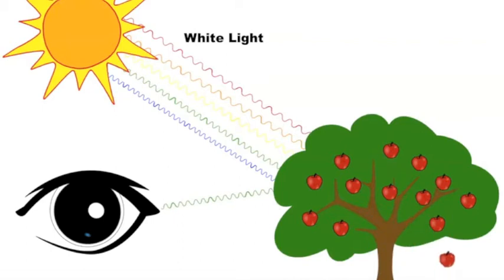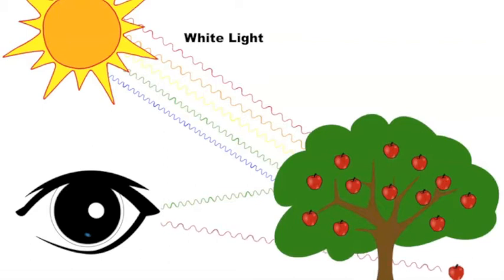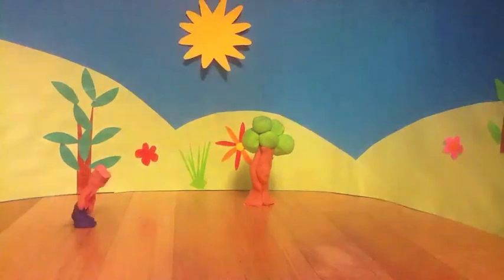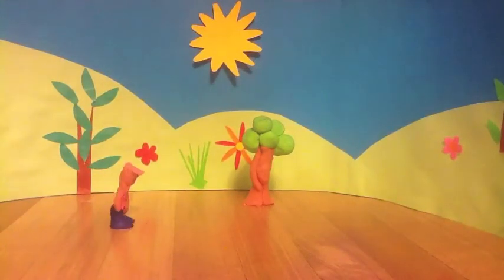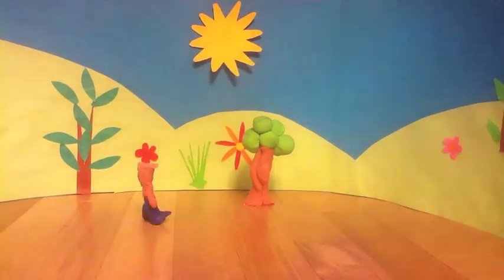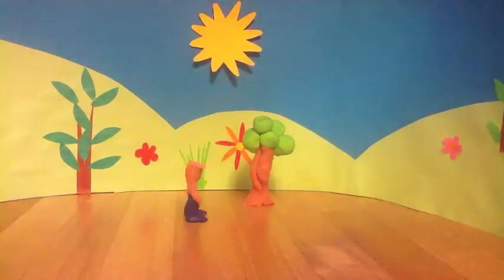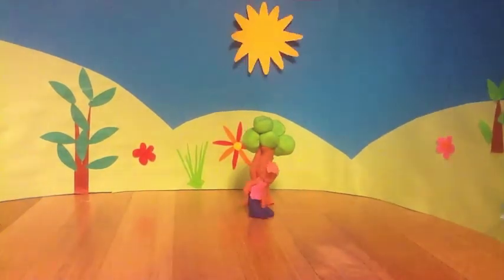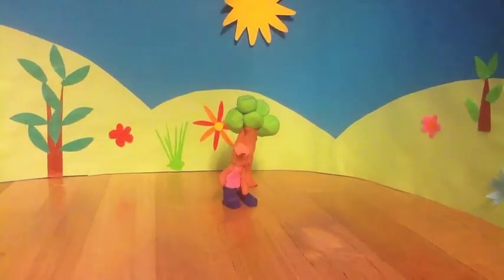With the red apple, it is the red colour waves that bounce back. When we walk past trees in the day, our eyes see that they are green. This is because white light from the sun has green colour waves in it.